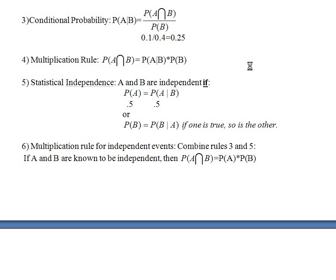Two things that start with A and B: accountants and boys. Suppose 50% of people at a party are accountants — the probability of somebody you talk to being an accountant is 0.5. If we know that being an accountant and being a male are independent, then the probability someone is an accountant given they're a boy is also 50%.